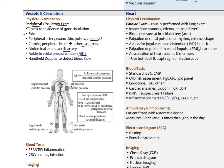The ABI compares blood pressures at the arm and ankle. It's the systolic pressure at the ankle over the systolic pressure at the brachial artery. A normal ABI is around 0.9 to 1.2. If it's way over that, the vessels are very sclerotic and incompressible. When it's less than that, an ABI of 0.41 to 0.9 indicates mild to moderate peripheral artery disease, and less than 0.41 indicates severe peripheral artery disease.